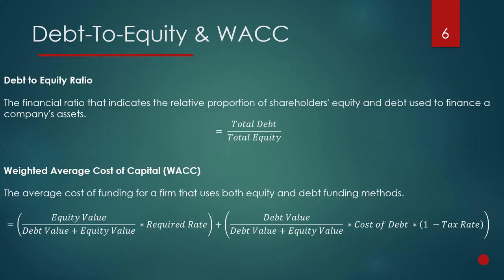Due to the differing risk profiles of equity and debt, they will have different costs to the firm. When analysing the capital structure and its funding, a firm will want to know the most optimal funding method — the levels of debt and equity which cost the lowest amount.